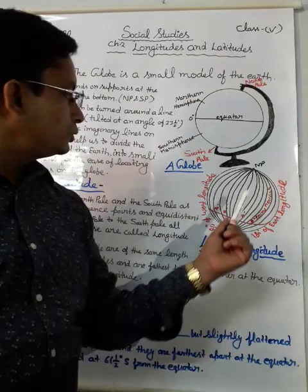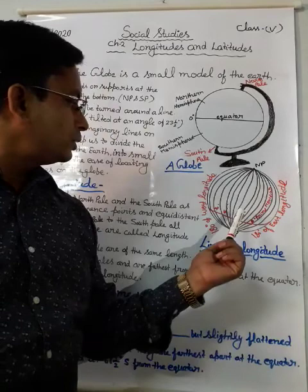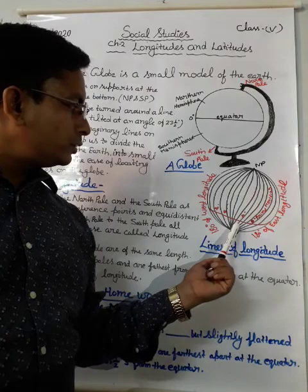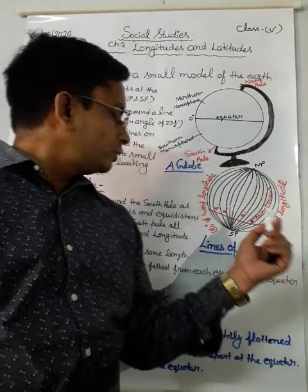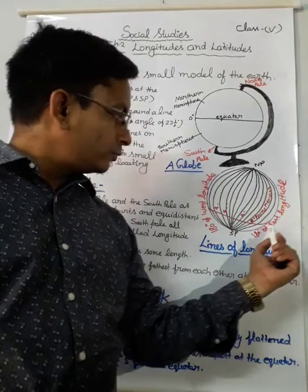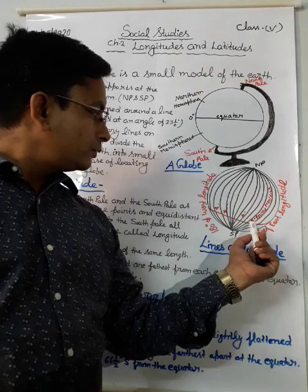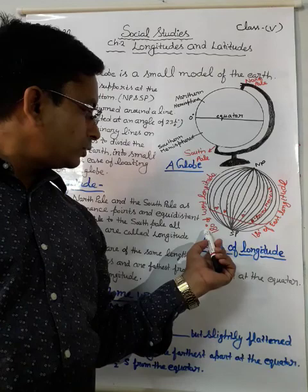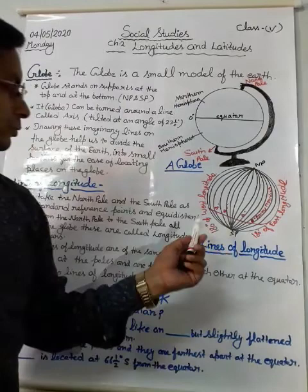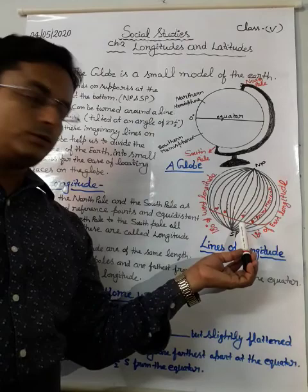There are 360 lines of longitude on the globe. You can see here the prime meridian at 0 degrees. This 0 degree prime meridian divides the earth into two equal halves. From this point towards the east side it is called 180 degrees of east longitude, and from this point towards the west side it is called 180 degrees of west longitude.